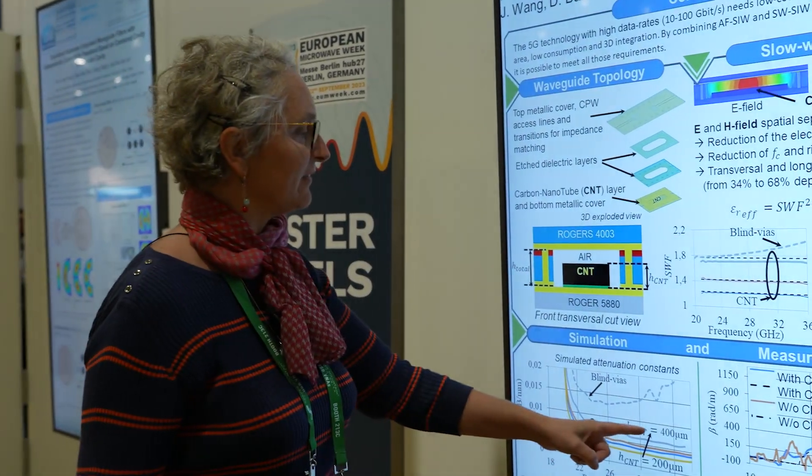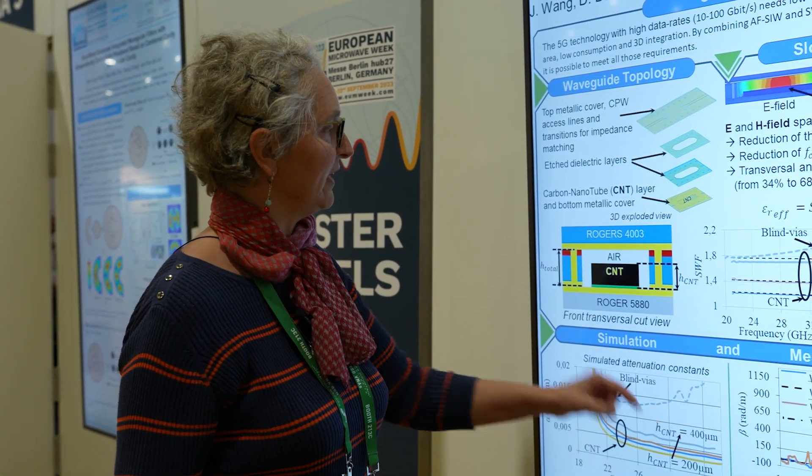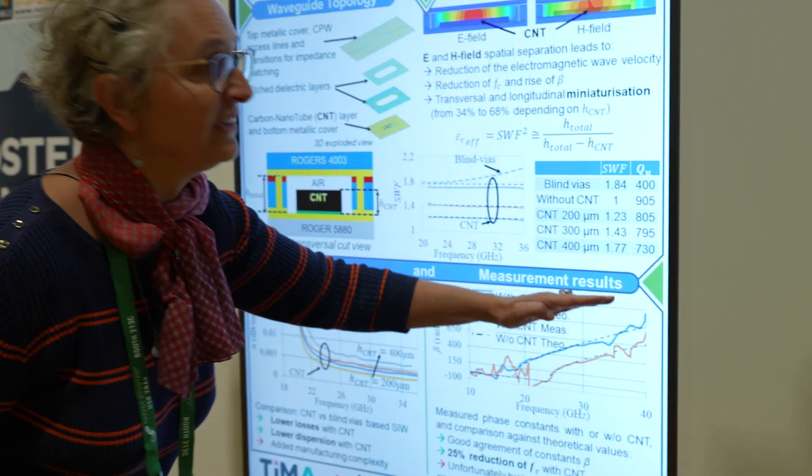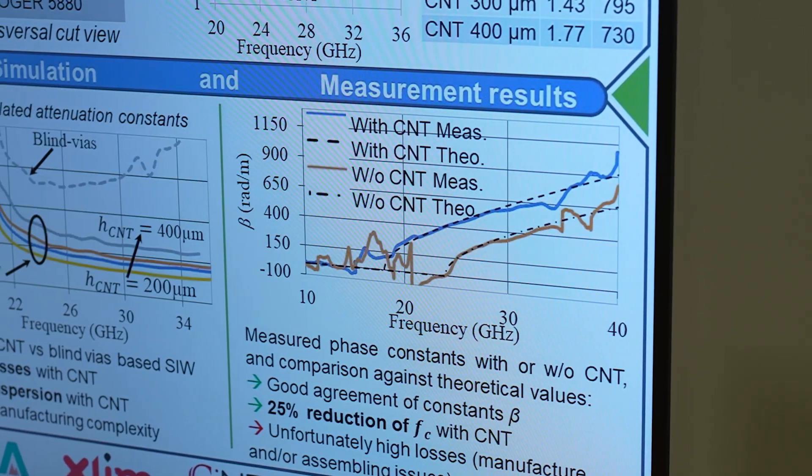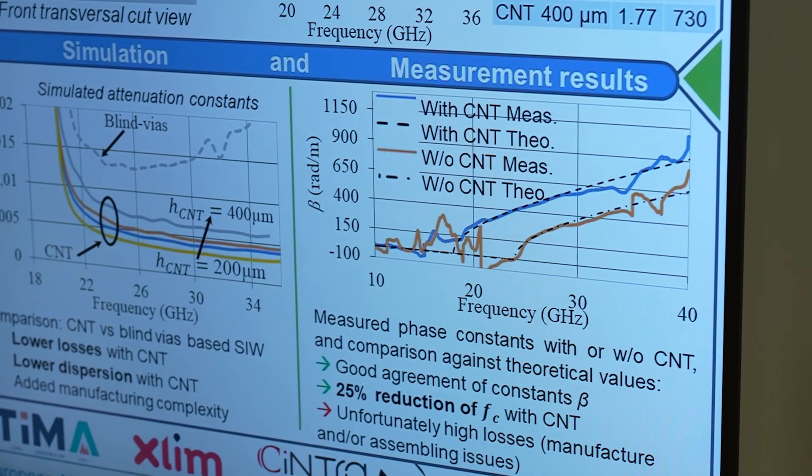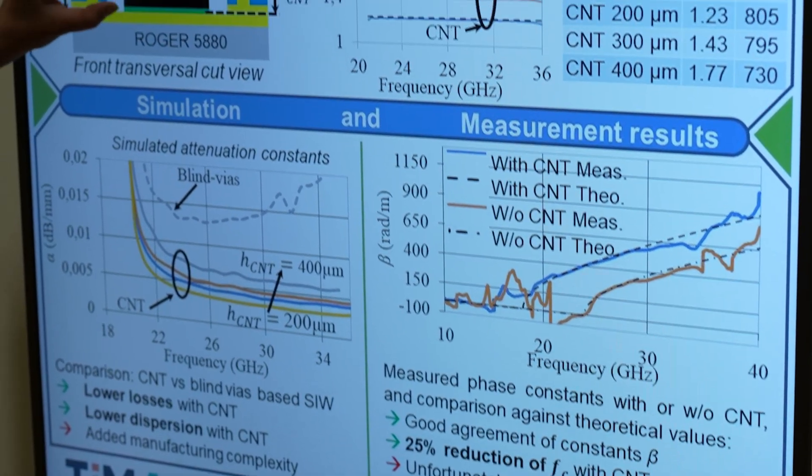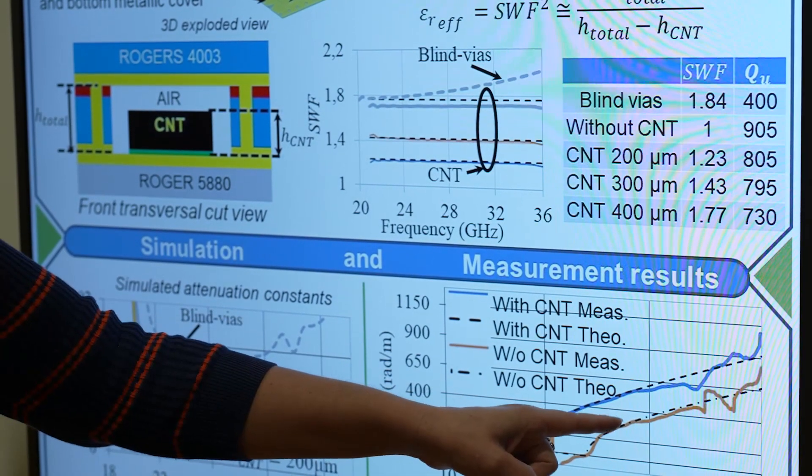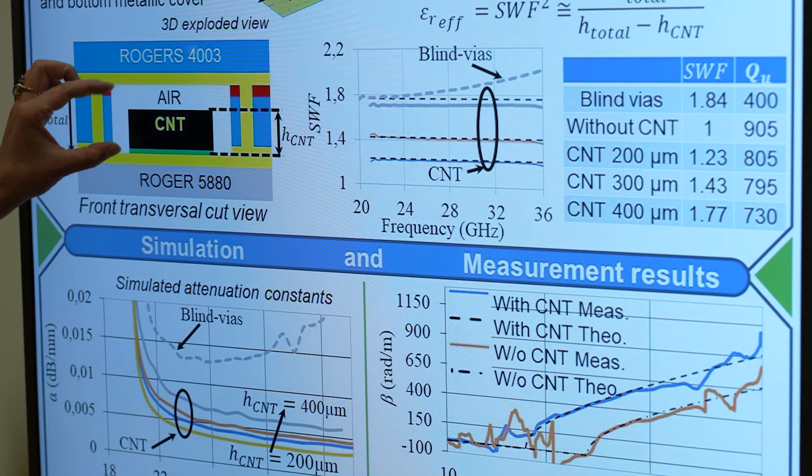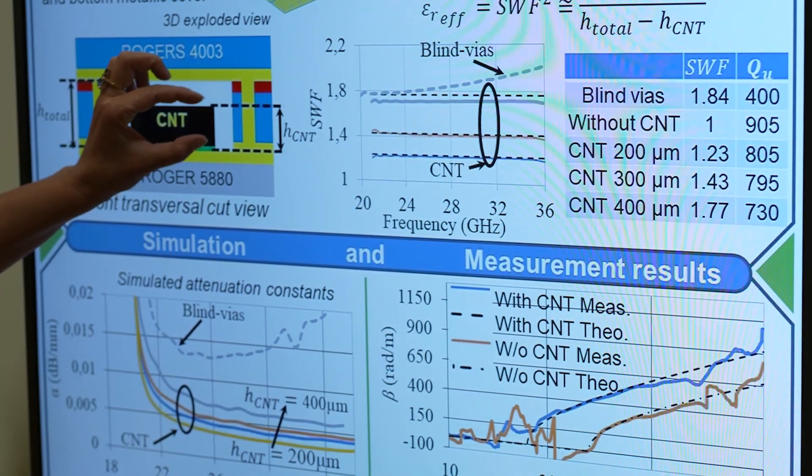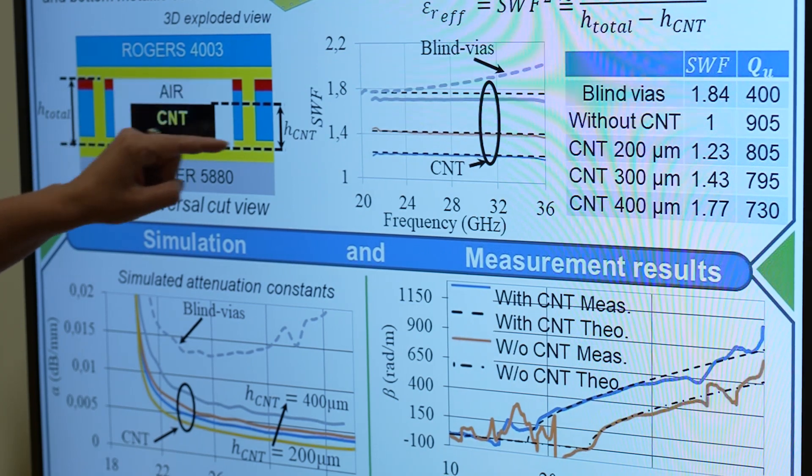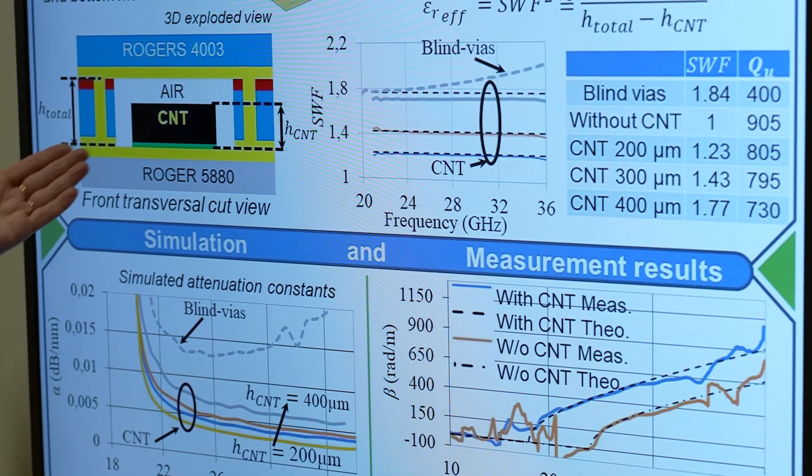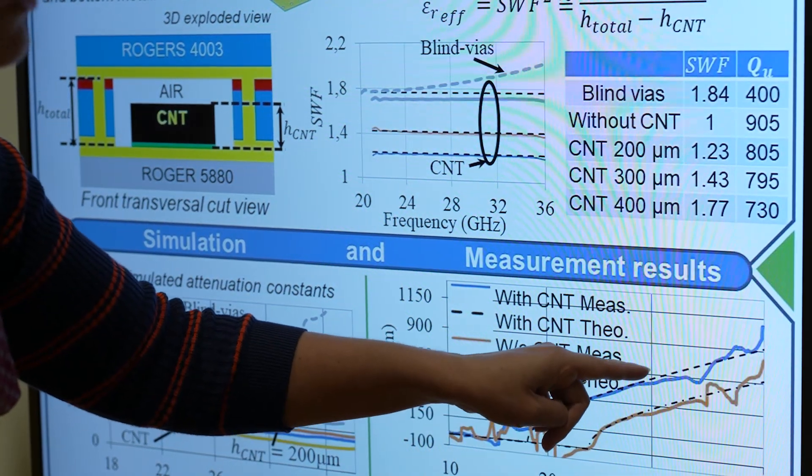What is interesting is that the height of the CNT—the highest will be the beta at a given frequency. Here we have the results with the height of 200 micrometers, which is the blue curve, whereas the orange curve is before depositing the CNT, a totally air-filled substrate integrated waveguide. We see that thanks to the CNT, we could reach the slow-wave effect.